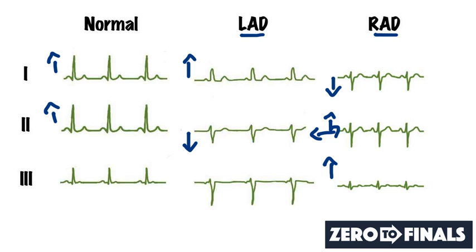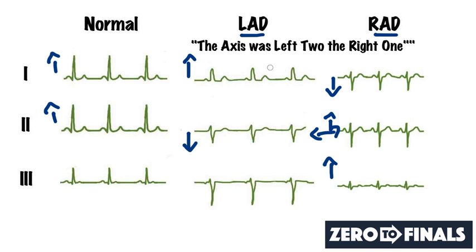One easy way to remember this is the phrase: 'the axis was left two, right one.' This tells you which lead becomes negative in which axis deviation. If lead two is negative, it's a left axis deviation. If lead one is negative, it's a right axis deviation. The axis was left two, right one.